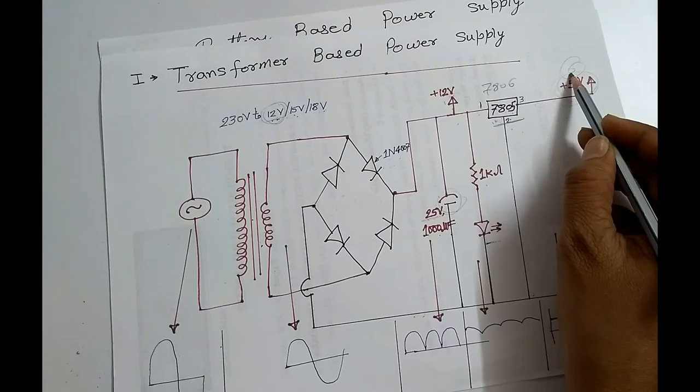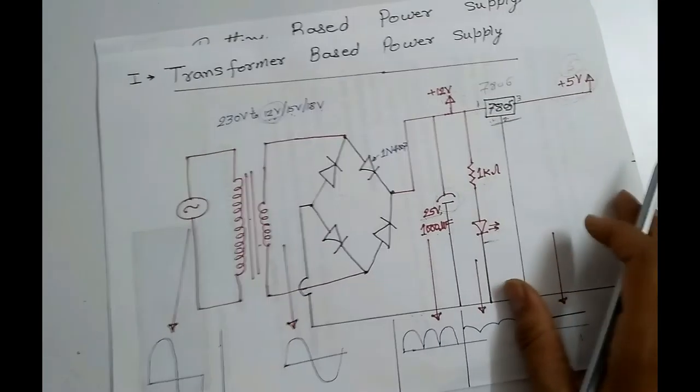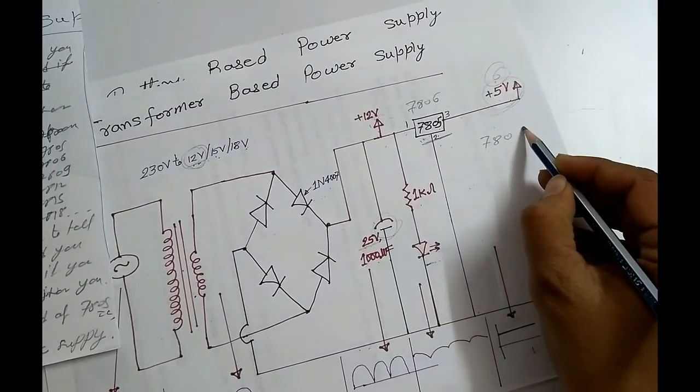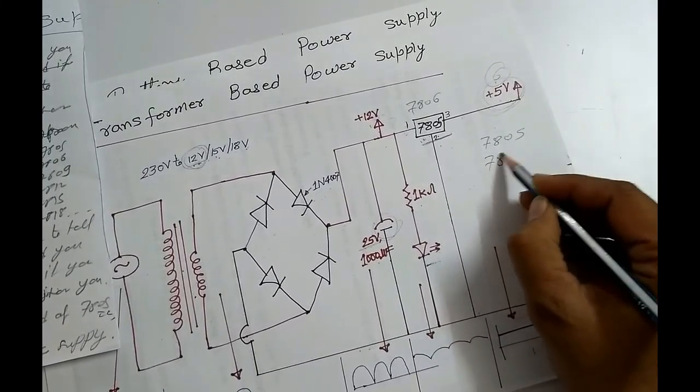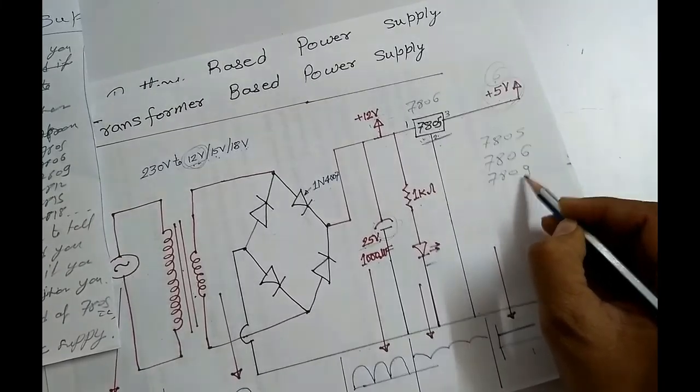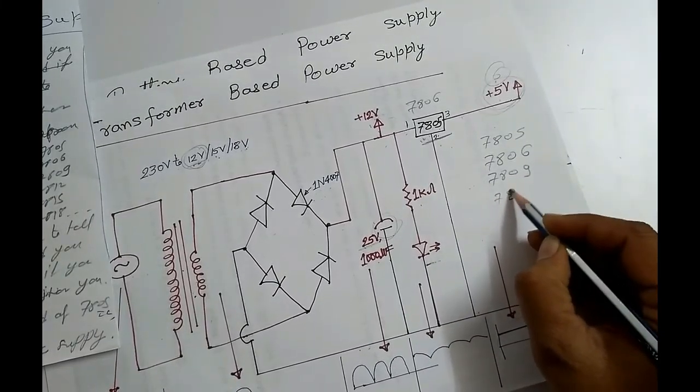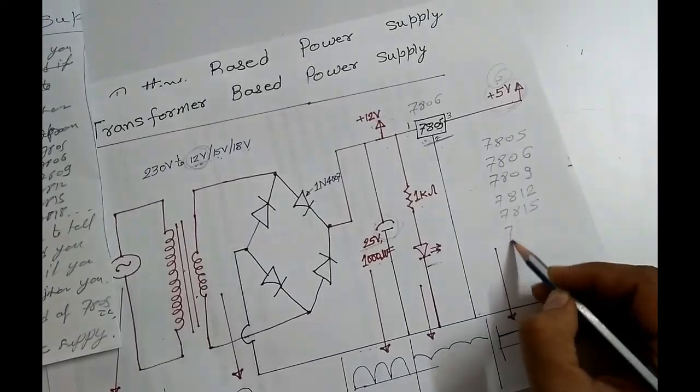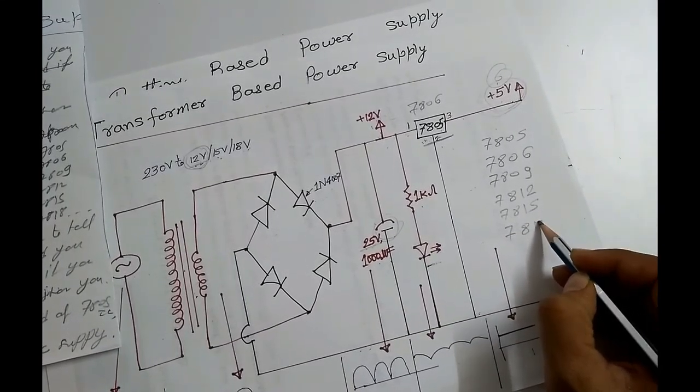Means in market there are other voltage regulator ICs also, like from 7805, 7806, 7809, 7812, 7815, 7818.